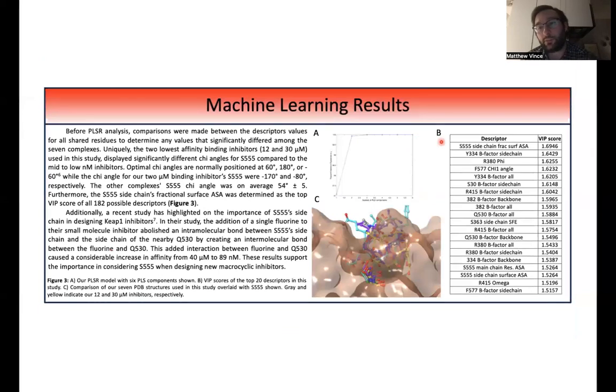For B, my VIP scores for each descriptor are shown. So VIP determines the most influential descriptors for determining binding affinity in this case. So as we can see here, we have this Serine 555.